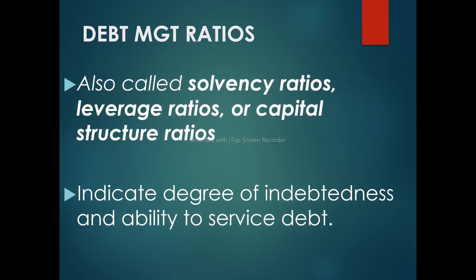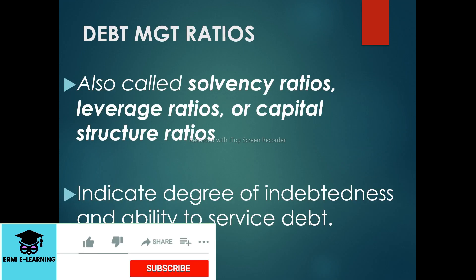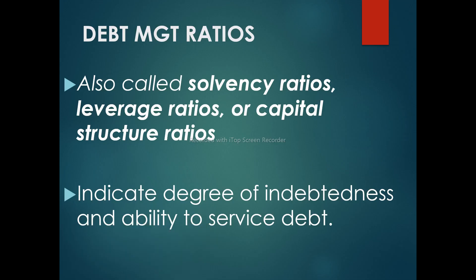The next Activity Ratio is Debt Management Ratio. Debt Management Ratio is also called Solvency Ratio, Leverage Ratio, or Capital Structure Ratio. This ratio measures the degree of indebtedness and the ability to service a debt.